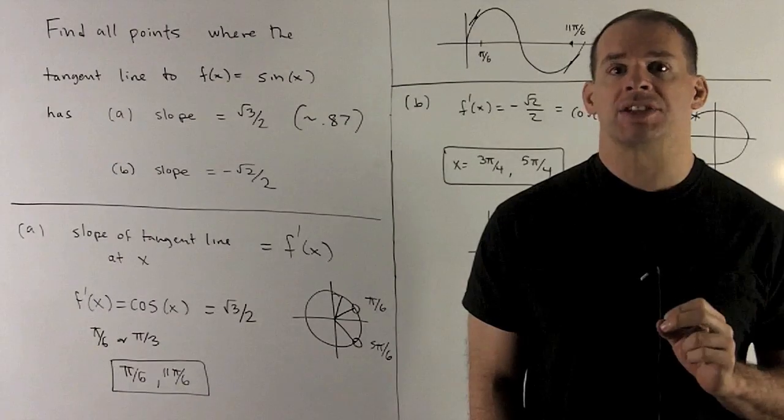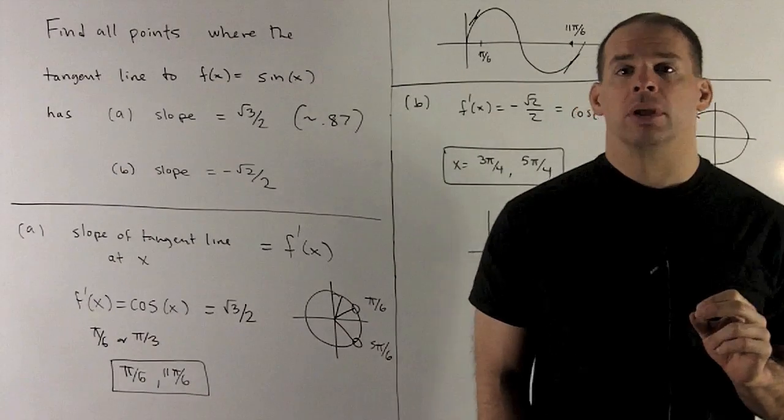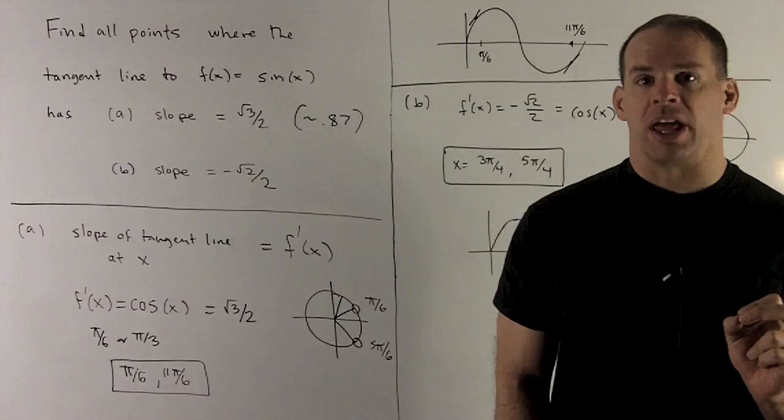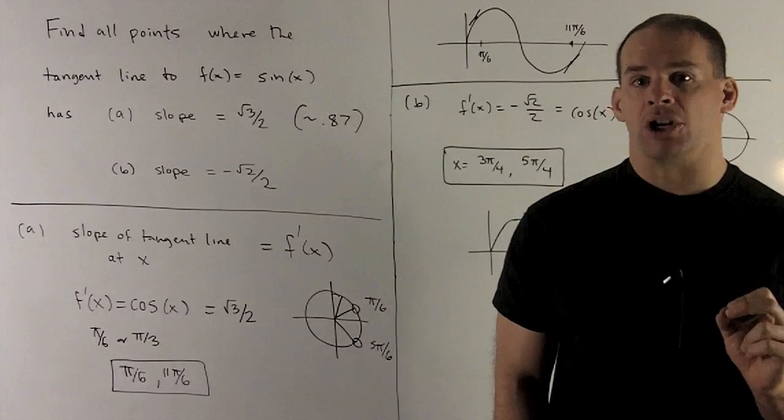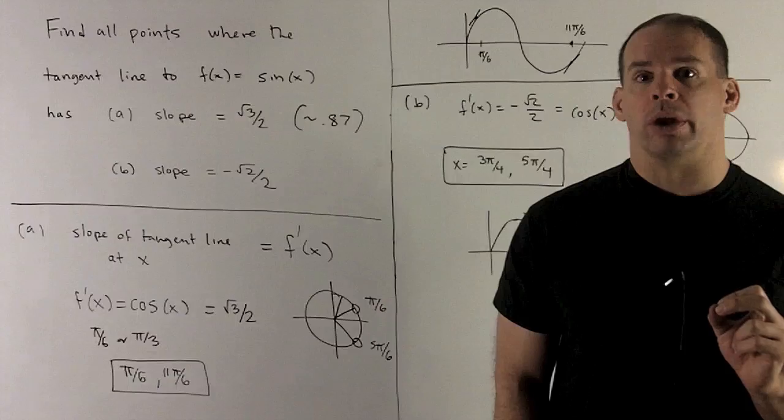So for the first case, square root of 3 over 2, what are we trying to do here? We want the slope of the tangent line. The way we get that is take the derivative of our function and evaluate it at our point.